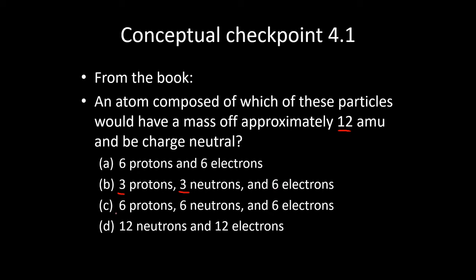The third one here has six protons, six neutrons, and six electrons. Because we have the same number of protons and electrons, that will give us a neutral charge. And because we have six protons and six neutrons, that will give us a mass of 12 AMU. So this is our answer.